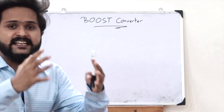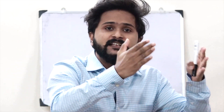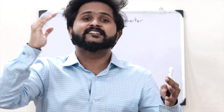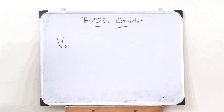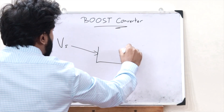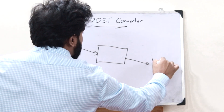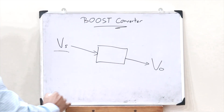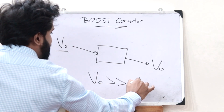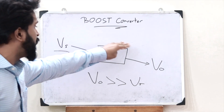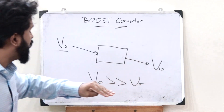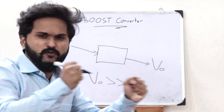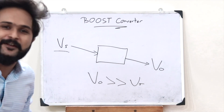A boost converter is a kind of DC to DC converter — that is, it converts one kind of DC voltage to another. To be specific, it is a type of step-up DC converter. If a source voltage VS is given to a boost converter, it will be boosted and an output voltage VO is obtained which is greater than the input voltage. That is, VO is much greater than VS. Whatever input we give is being boosted, and this boosted voltage is obtained at the output.